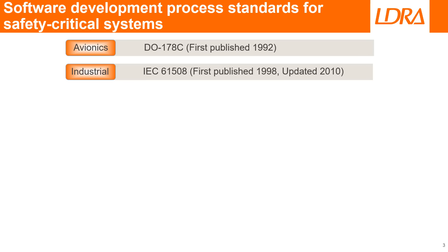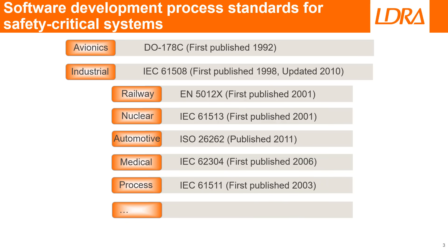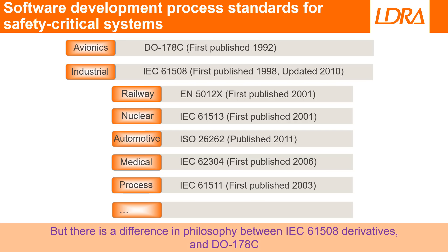A generic standard for electric and electronic systems, IEC 61508 was a turning point in the history of functional safety standards. It has been adapted to specific domains such as medical devices, automotive and railways. There is a difference in philosophy between IEC 61508 and its derivatives and DO-178C, which is important to recognise, especially if you are coming to DO-178C from a functional safety background.